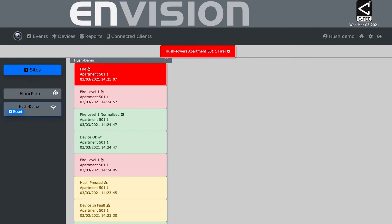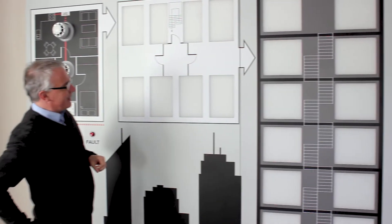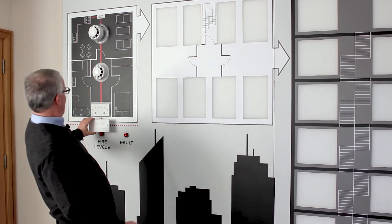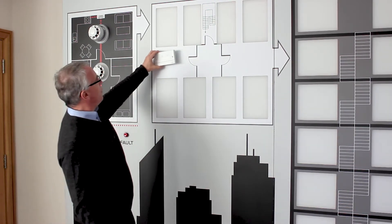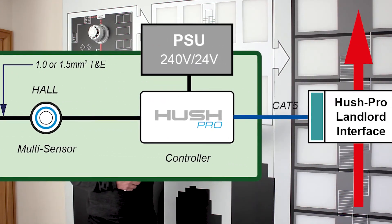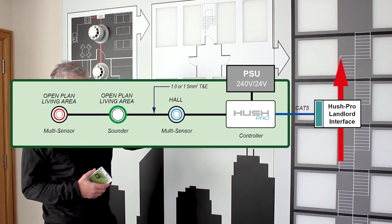So each individual dwelling now is interconnected by a landlord interface unit. So each different dwelling's grade C fire alarm system connects to the monitoring landlord system that you can see over there.